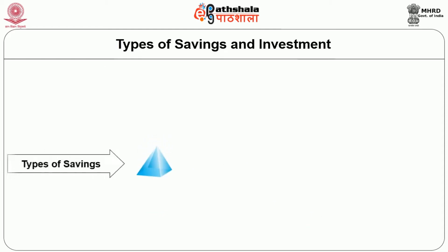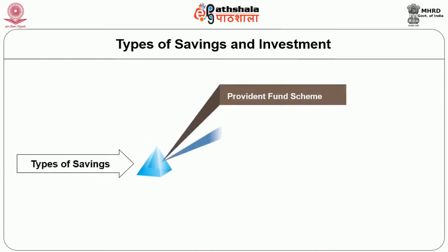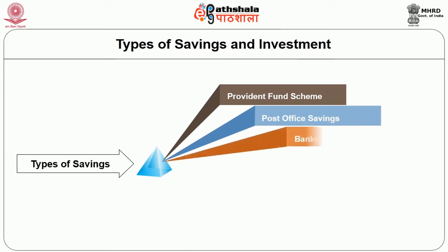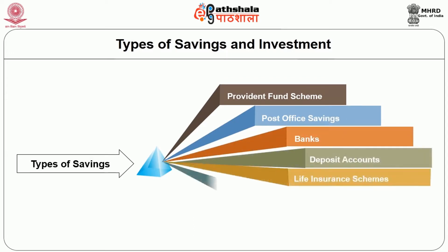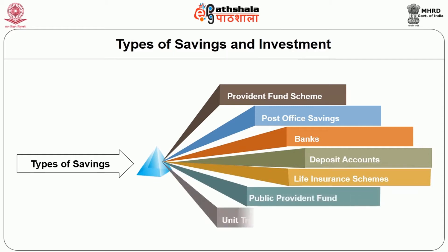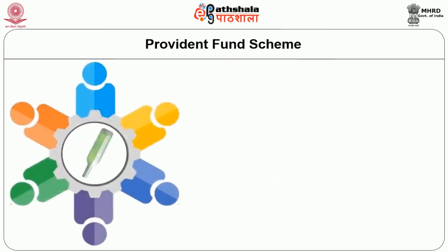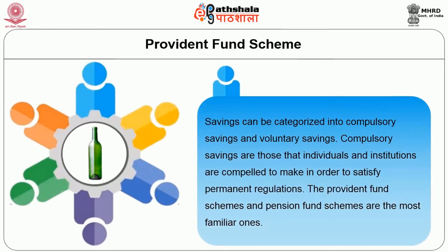The important types of savings are provident fund scheme, post office savings, banks, deposit accounts, life insurance schemes, public provident fund, and unit trust of India. Savings can be carried out as compulsory savings and voluntary savings. Compulsory savings are those that individuals and institutions are compelled to make in order to satisfy government regulations. The provident fund scheme and pension fund scheme are the most familiar ones.